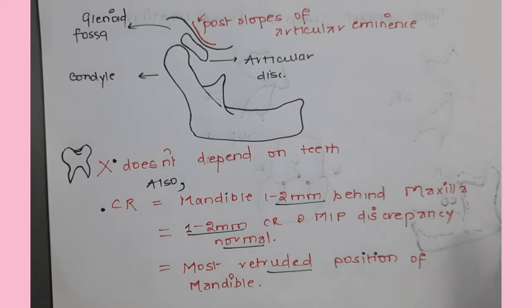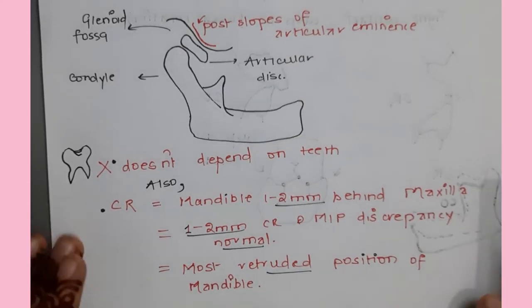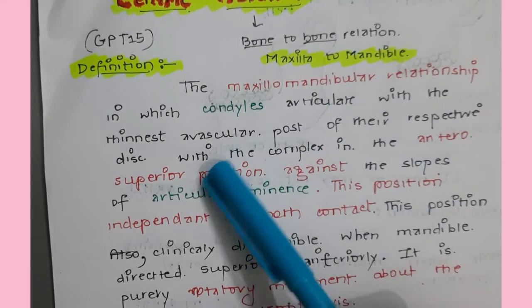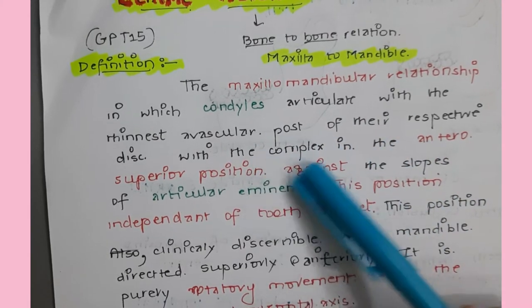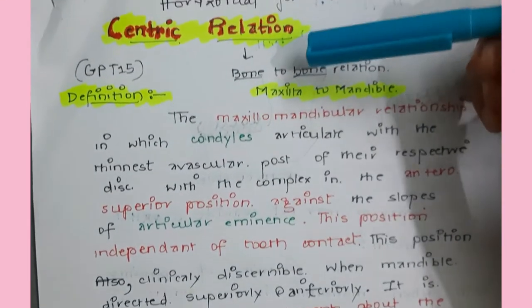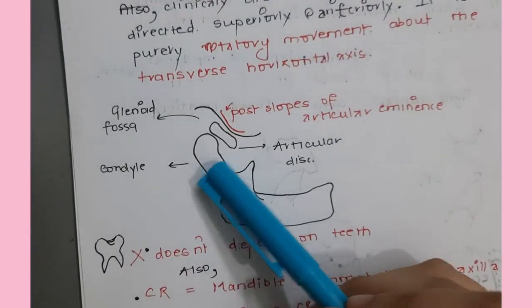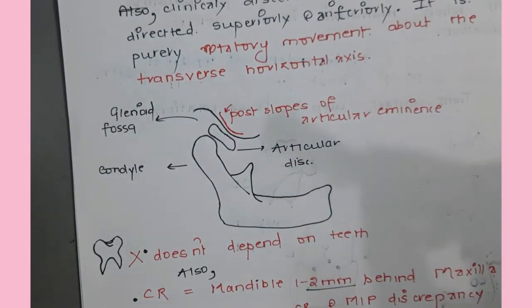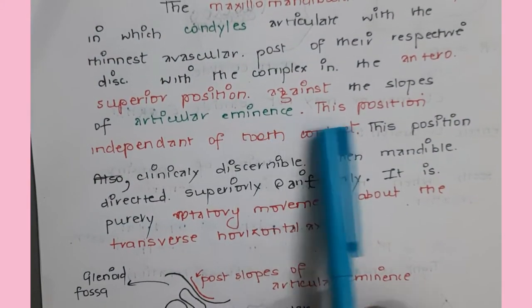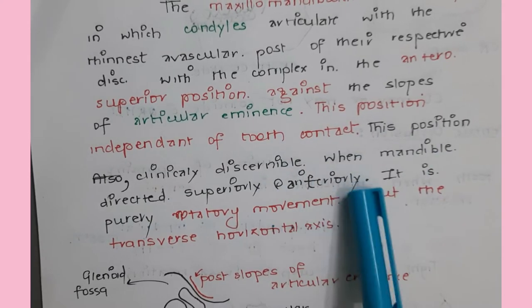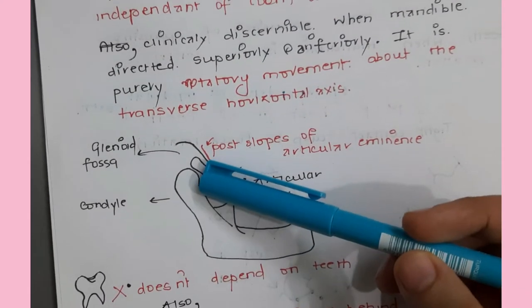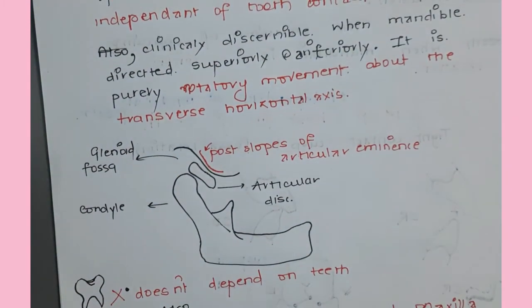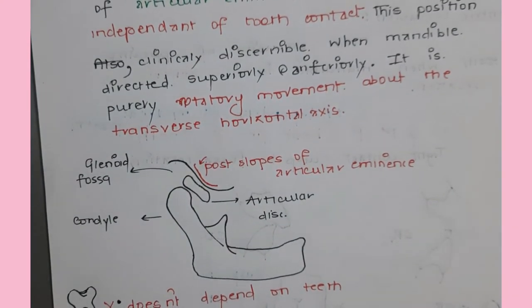That is considered normal - normality has a range, nothing is ideal. As per the definition, it is a maxillomandibular relationship in which the condyles articulate with the avascular portion of the articular disc and are in the anterosuperior position - along the posterior slope of the articular eminence - and it is independent of tooth contact.